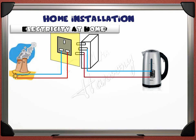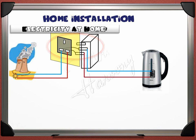Until now the kettle will not work, because the two halves of the circuit are not connected to each other. When we put the plug in the socket, the circuit is complete and the electric energy supply starts. The main wire that comes with electric energy is the brown one — it is given the name live wire. The wire that closes the circuit is the blue wire, and it is given the name the neutral wire.